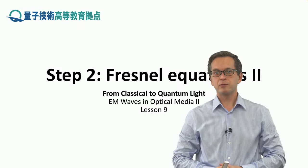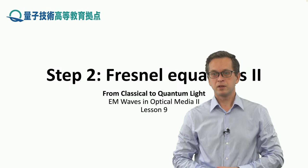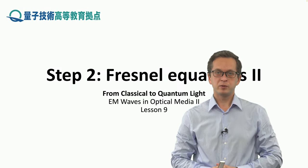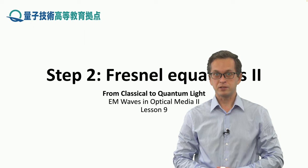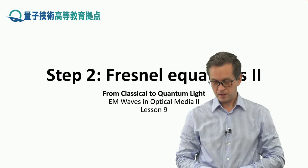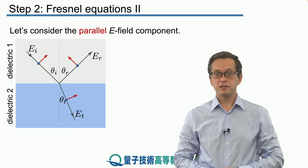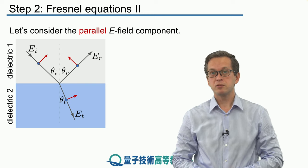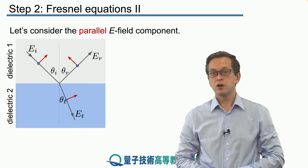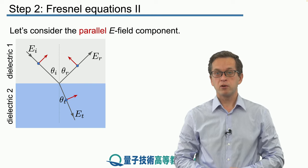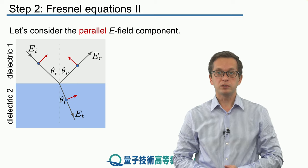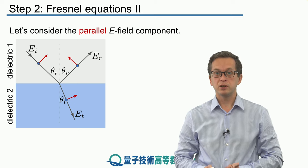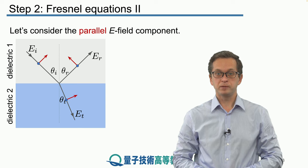Step 2: Fresnel equations 2. In this step we will derive the remaining two Fresnel equations. To remind you what we have done in the first step, we derived the first two Fresnel equations F1 and F2 for the orthogonal component of the field. Now we will do the same but considering the parallel component.